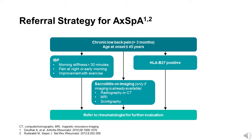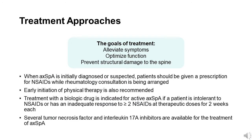It is critical that primary care physicians screen for inflammatory back pain and other axial SpA features and refer patients with suspicion for axial SpA to a rheumatologist for further evaluation. The goals of treatment for axial SpA include alleviating symptoms, optimizing function, and preventing structural damage to the spine. The initial medication class for treatment of active axial SpA is non-steroidal anti-inflammatory therapy. Treatment with a biologic drug is indicated for active axial SpA if a patient is intolerant to NSAIDs or has an inadequate response to two or more NSAIDs at a therapeutic dose for two weeks each.